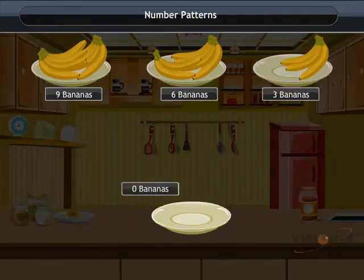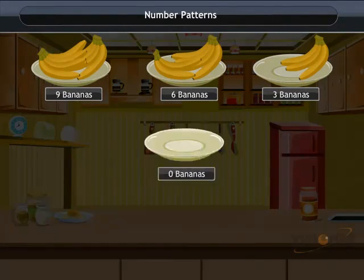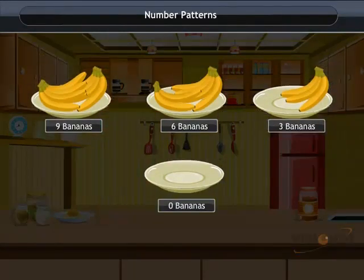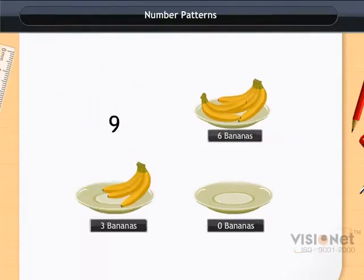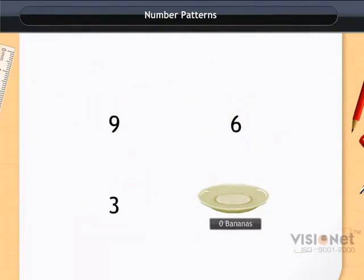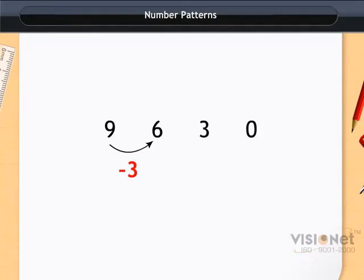So the remaining bananas present on the plate is 0. Now we can see the pattern of 9, 6, 3, 0. That is, 9 minus 3 is equal to 6, 6 minus 3 is equal to 3, 3 minus 3 is equal to 0.